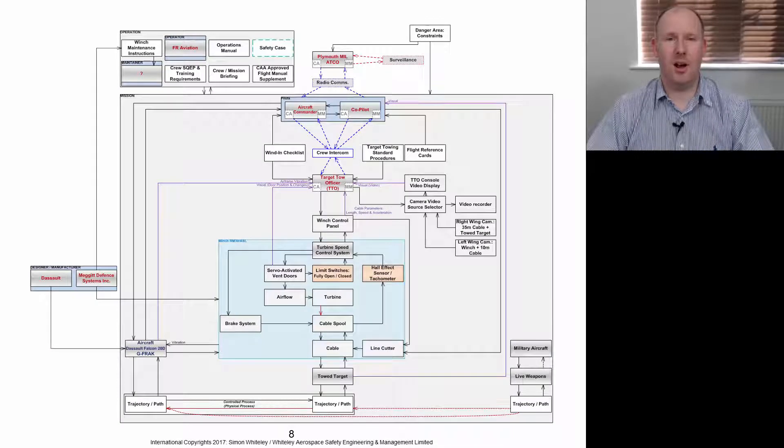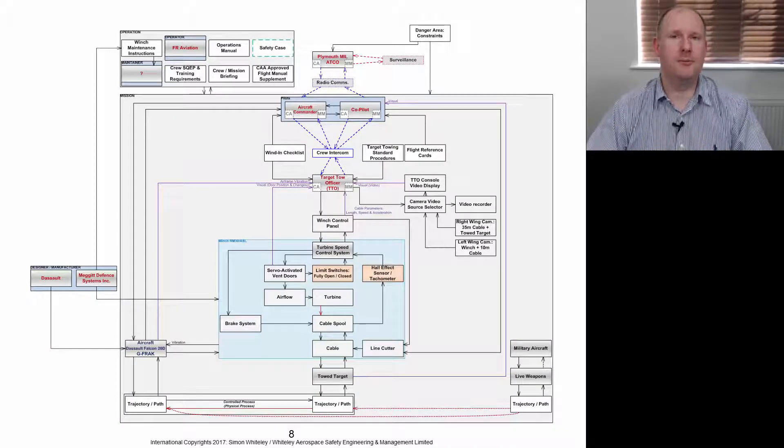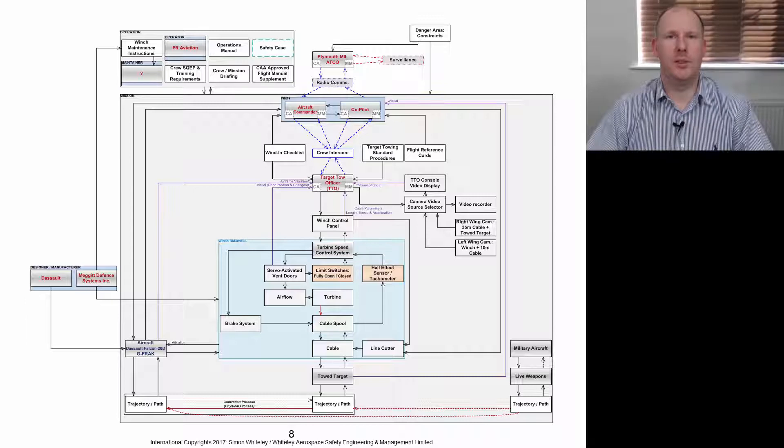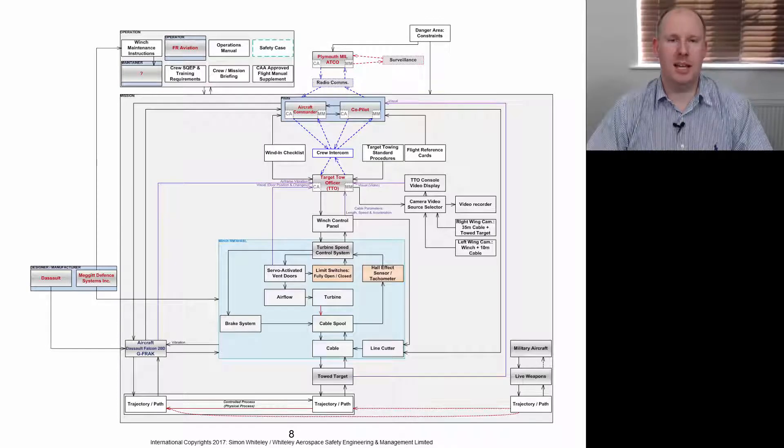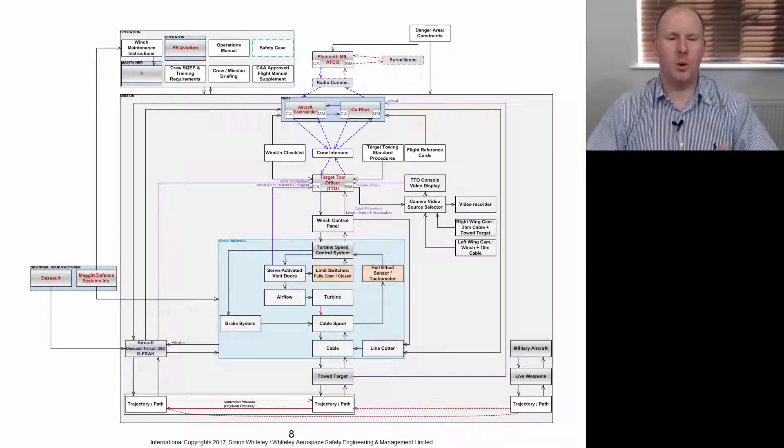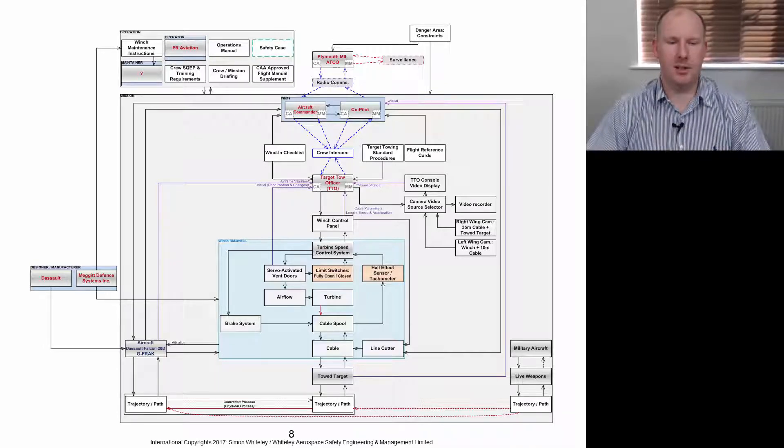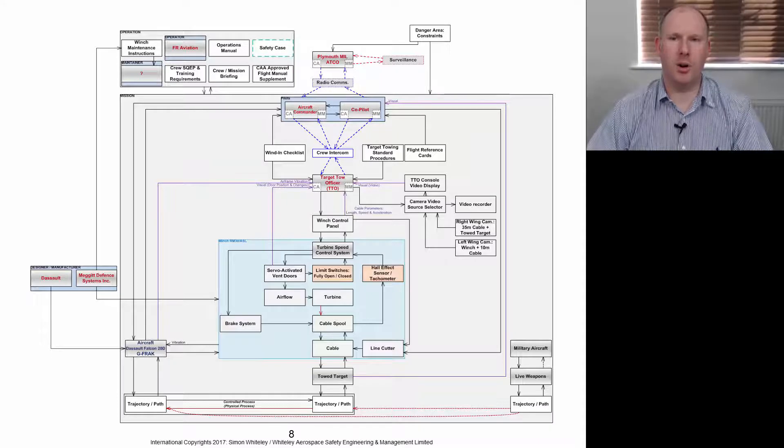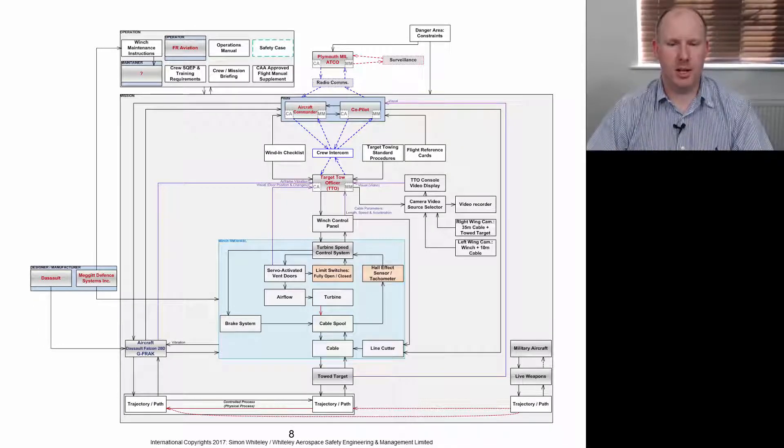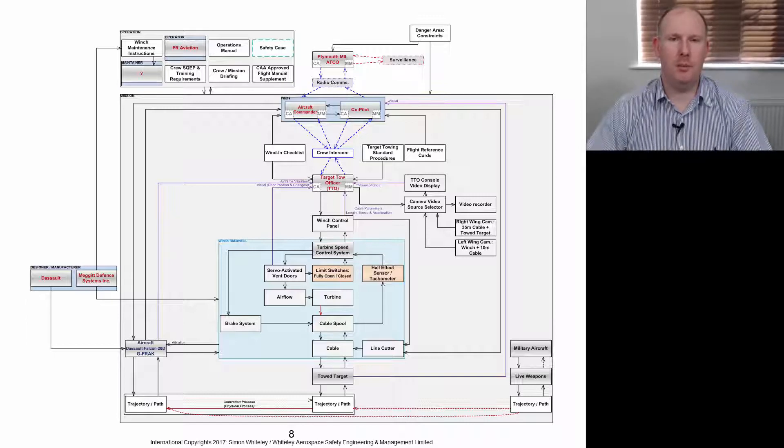This is the hierarchical control structure that I've created from the information contained within the accident investigation board report. Across the bottom, you can see there the control process, the physical process, which in this case is the trajectory not only of the aircraft but of the towed target. The aircraft is obviously under the control of the pilots, which is under the control of the military air traffic controller.